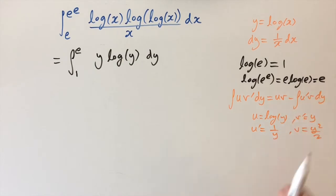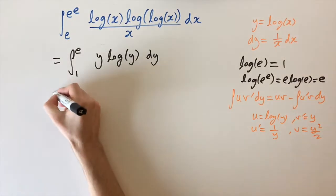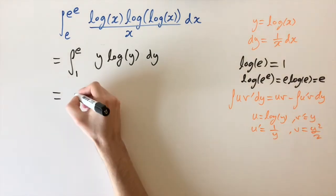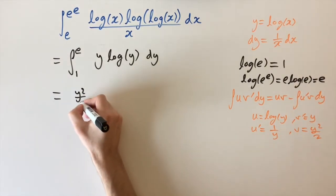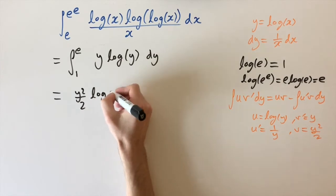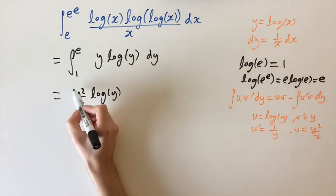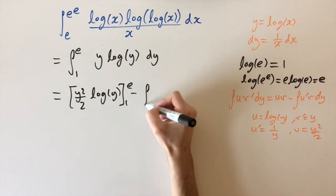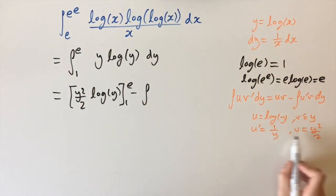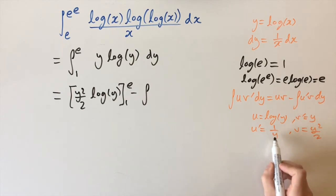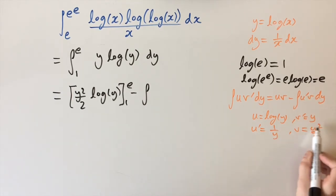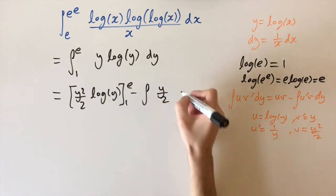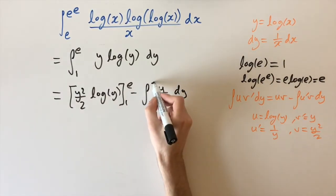Now we plug into the formula. We get u times v: that's y squared over 2 times log y, evaluated with limits 1 to e. Then minus the integral of u' times v: the 1 over y cancels with one of the y's in the v term, leaving us with the integral of y over 2 dy, from 1 to e.